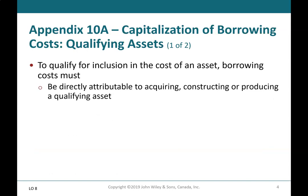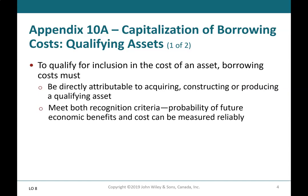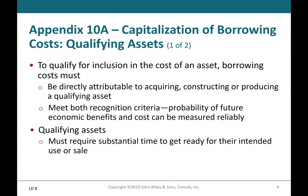Qualifying Assets (1 of 2): To qualify for inclusion in the cost of an asset, borrowing costs must be directly attributable to acquiring, constructing, or producing a qualifying asset, and must meet both recognition criteria — probability of future economic benefits, and costs can be measured reliably. Qualifying assets must require substantial time to get ready for their intended use or sale.